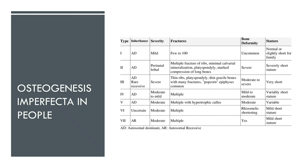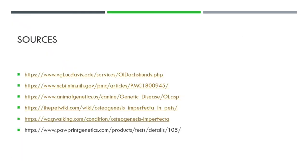Briefly regarding osteogenesis imperfecta in people: there are at least seven different types, with newer research suggesting there may be nine or more, depending on which gene is affected. Each type has a different severity — for example, type two is the most severe, where individuals are typically born stillborn or die during childbirth. Since research in dogs is still new, we don't yet know how many types exist in dogs, but researchers are trying to correlate canine types to those seen in humans. It will be interesting to see, as more research emerges, what different types exist and how their severities and diagnostic criteria differ.